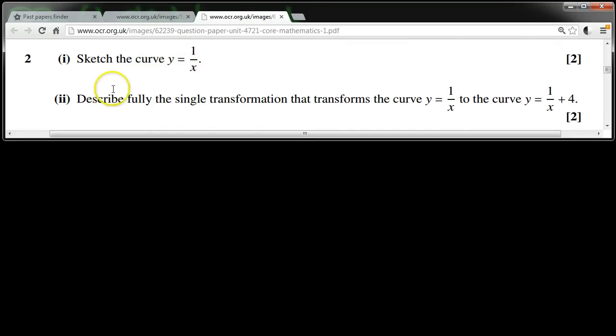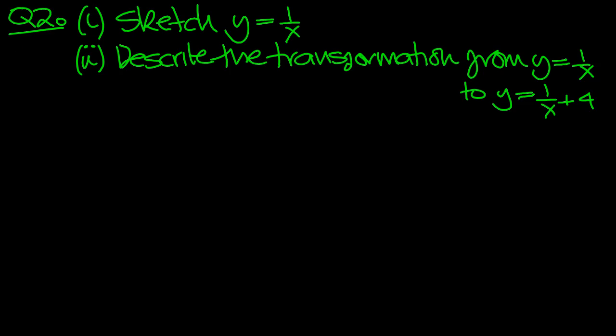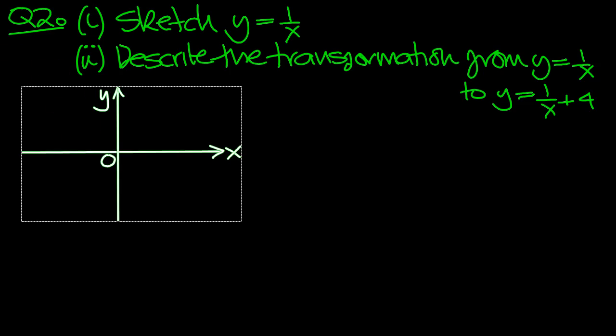Sketch the curve y equals 1 over x and describe fully the single transformation that transforms the curve y equals 1 over x to the curve y equals 1 over x plus 4. So let's have a look at the sketch first then. Part 1.